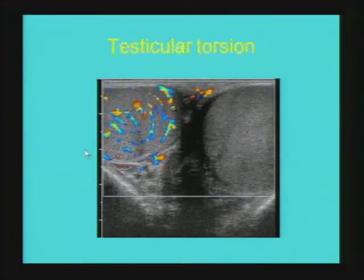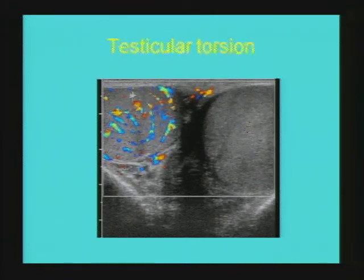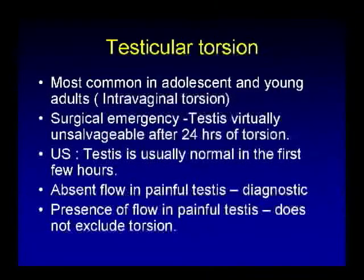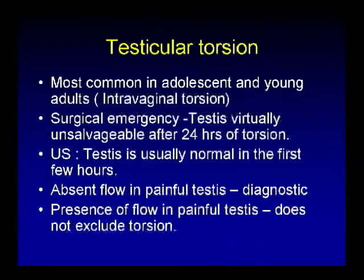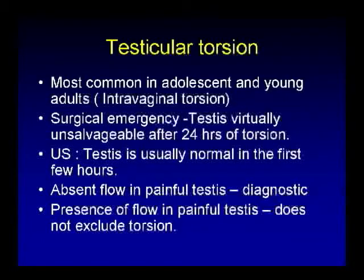Another acute condition is testicular torsion, the second most common cause of acute scrotum in children. This ultrasound shows transverse images of bilateral testicles with color Doppler evaluation showing normal flow in the right testicle and absence of flow in the left, which shows minimal heterogeneity of echotexture and diffuse enlargement. Testicular torsion is a condition of adolescent and young adults; most cases are intravaginal torsion. It is a surgical emergency, as salvage depends on duration of torsion, and after 24 hours the testis is almost unsalvageable. Absence of flow in the painful testis is the criterion for diagnosis.